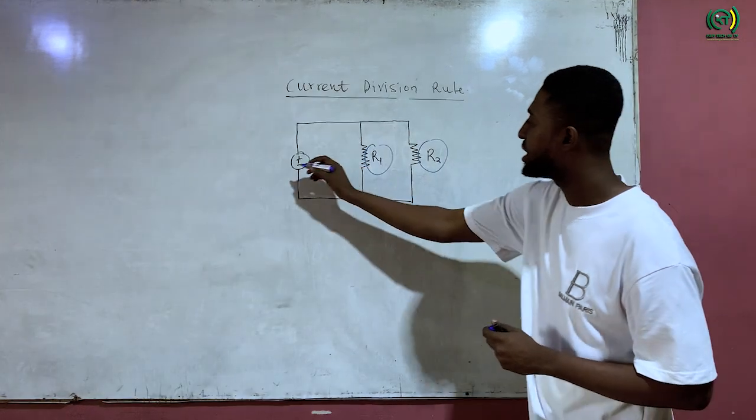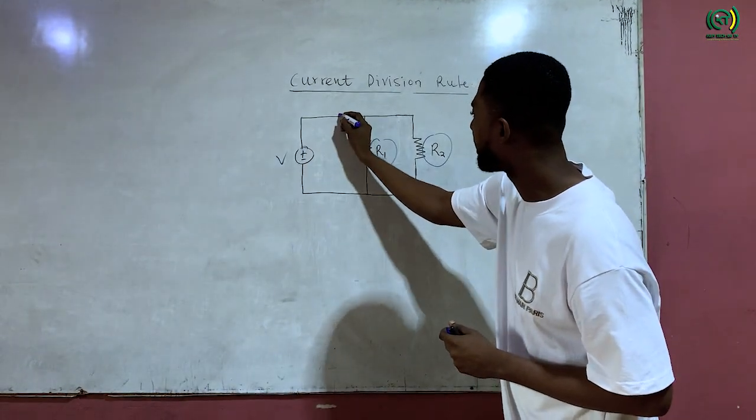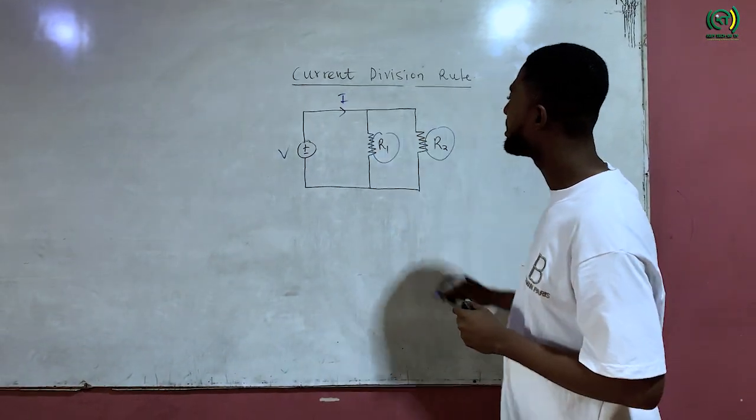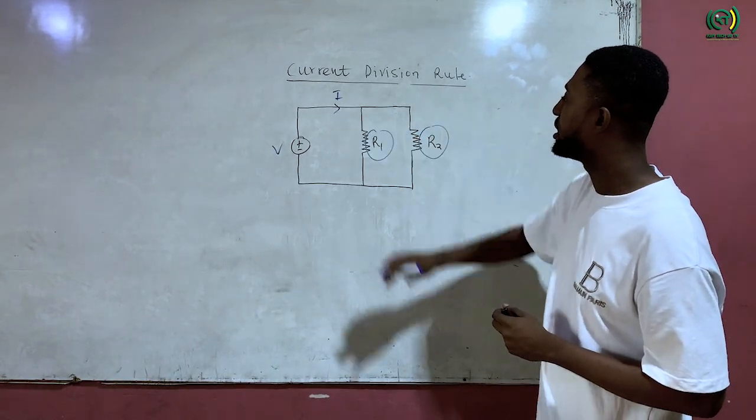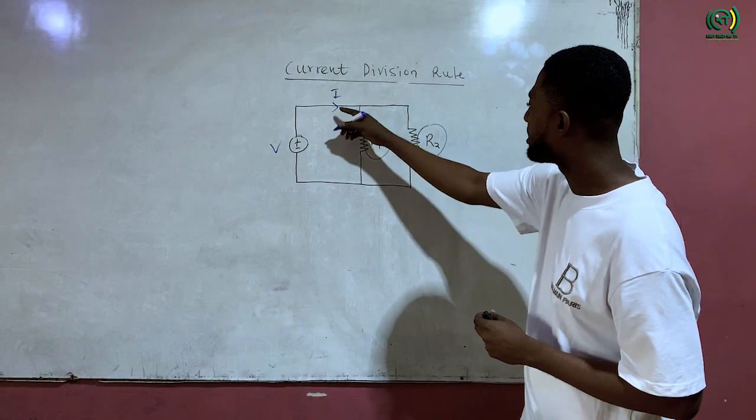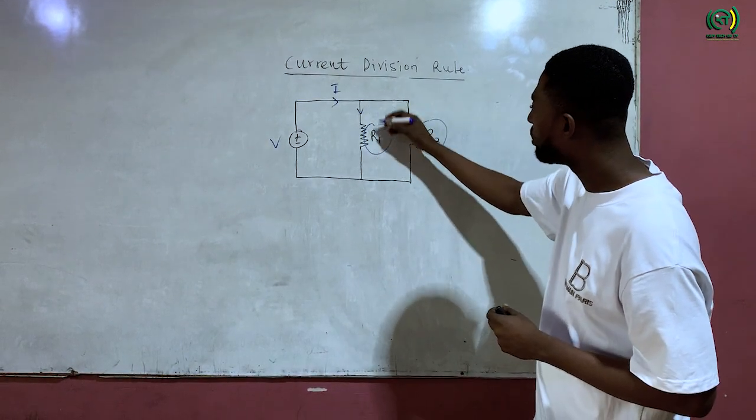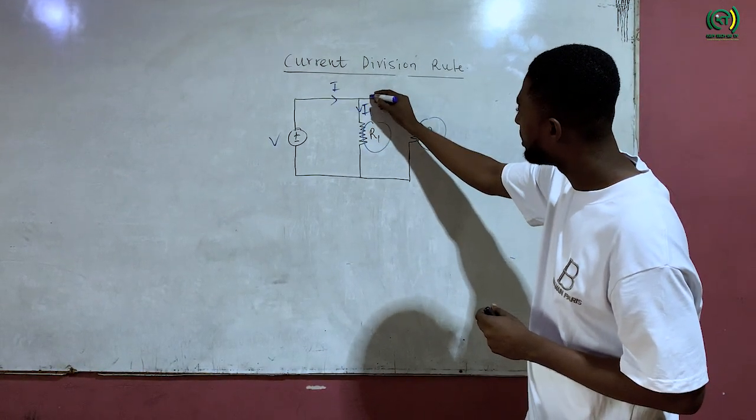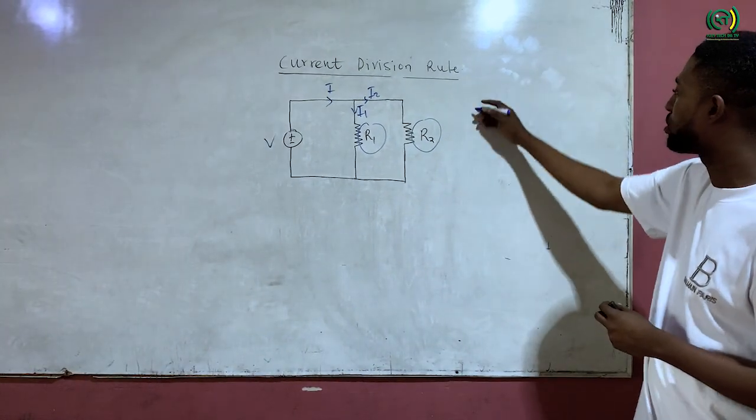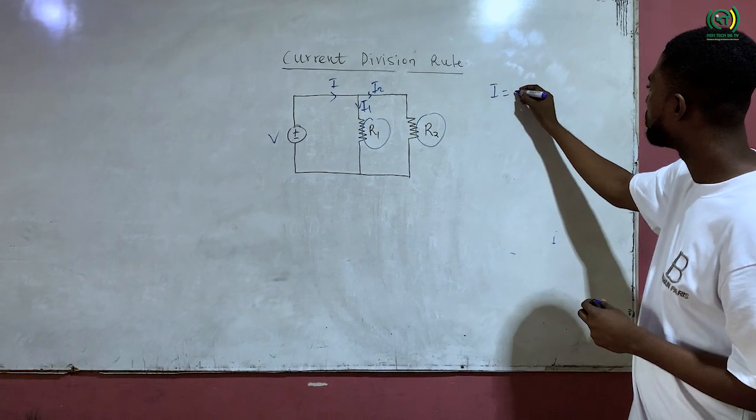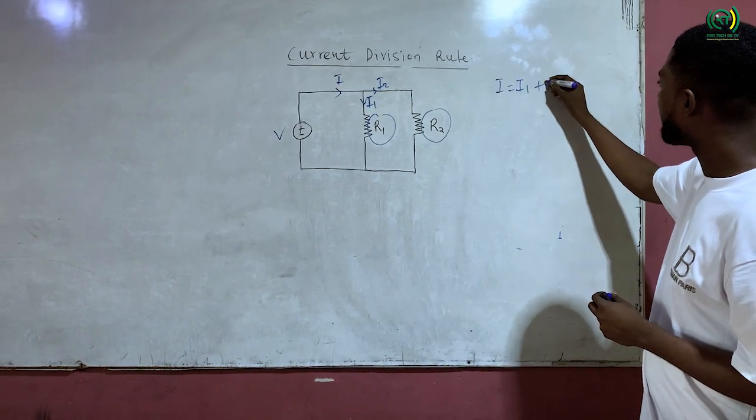Now this source voltage will drive a current which is I. Since they are connected in parallel, these two resistors will share the source current. So if this is I, current through I1 is I1 and this is I2. Therefore from Kirchoff's current law, I is equal to I1 plus I2.